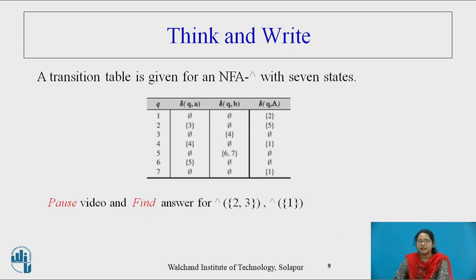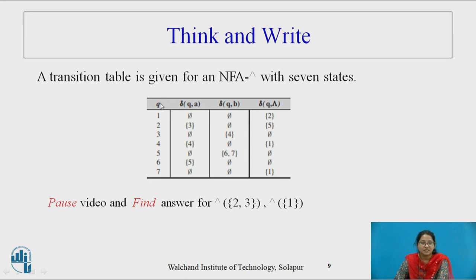Now, all students, please pause the video. A transition table is given for a particular NFA with null transition having 7 states. Please try to find the answer for null closure of {2, 3} and null closure of {1}. Take a paper and solve it.